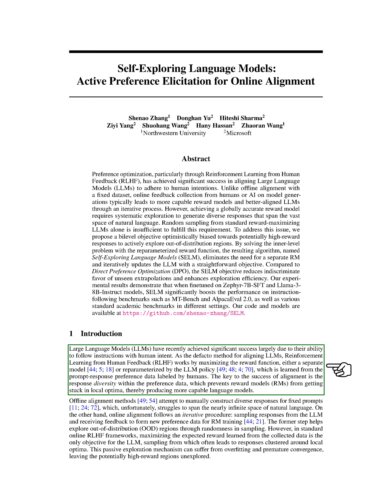In this section, we will discuss the concept of large language models, LLMs, and their alignment methods. LLMs have been successful in following human instructions accurately. One common method used for aligning LLMs is reinforcement learning from human feedback, RLHF. RLHF works by maximizing a reward function, which can be a separate model or reparameterized by the LLM policy.